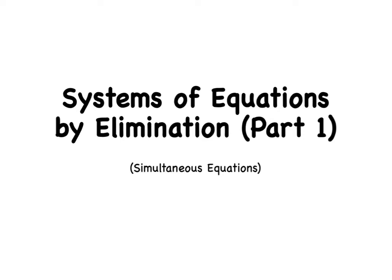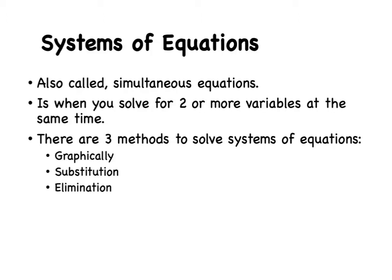In today's video, we're going to take a look at solving systems of equations by a new method called elimination. Just to recap, systems of equations are also called simultaneous equations, and it's when we're solving for two or more variables at the same time — in our case, x and y. We want to give our answer as an ordered pair. We've already learned how to solve graphically and using substitution, and today we're looking at our last method: elimination.